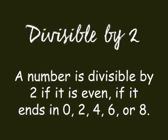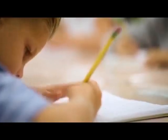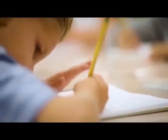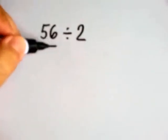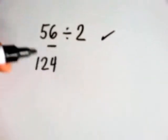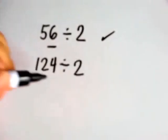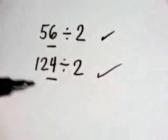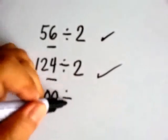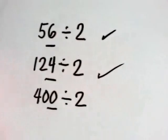You can pause this video and copy this rule on your notebook. How about these numbers — divisible din ba sila by 2? Is 56 divisible by 2? Yes! Nag-e-end sa 6, an even number. Is 124 divisible by 2? Yes! Nag-e-end sa 4, even number din. Is 400 divisible by 2? Yes! Even number din.